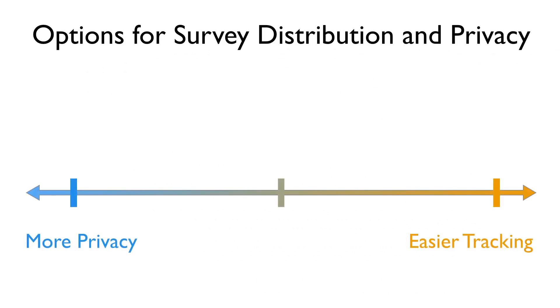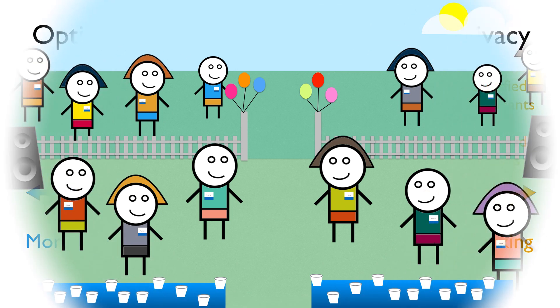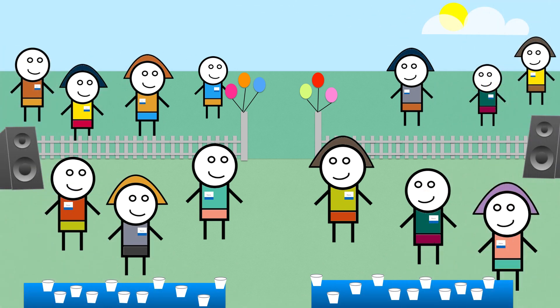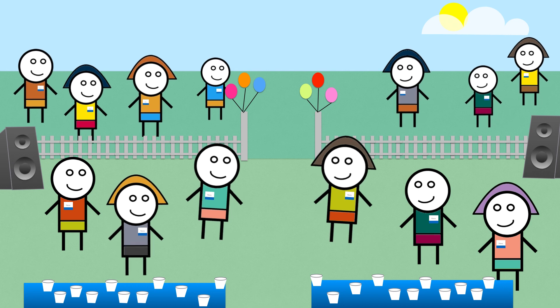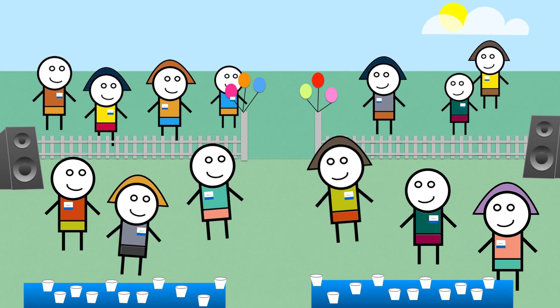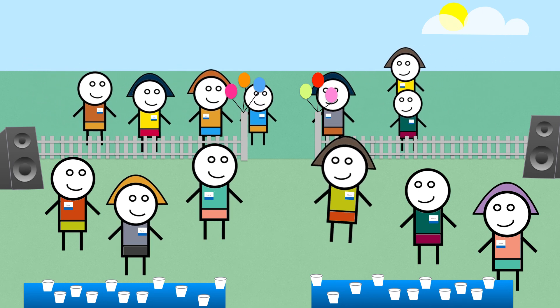Way at the opposite end of the distribution and security spectrum, you can create individual email links for each respondent in your sample pool and identify each of these individuals in the data. This is like having a party where you require your guests to RSVP and nobody there is wearing a costume — you know exactly who's coming and you can identify each individual there.